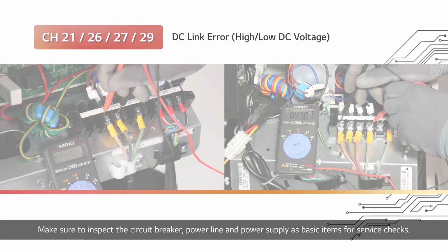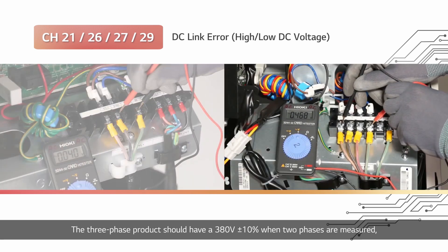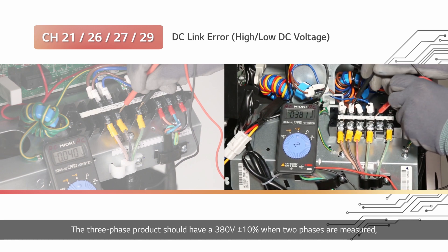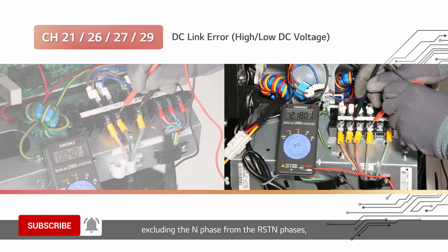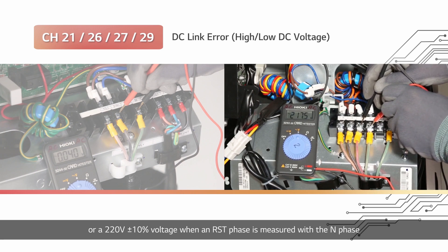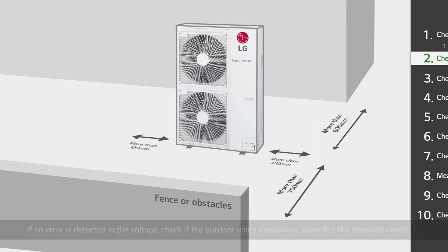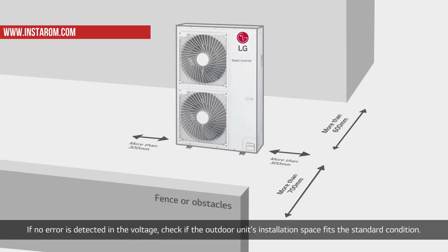Make sure to inspect the circuit breaker, power line, and power supply as basic items for service checks. The single-phase product should have 220V ±10% when the L-N phase is measured. The three-phase product should have 380V ±10% when two phases are measured, excluding the N phase from the RST phases, or 220V ±10% when an RST phase is measured with the N phase.